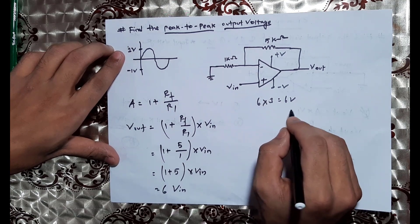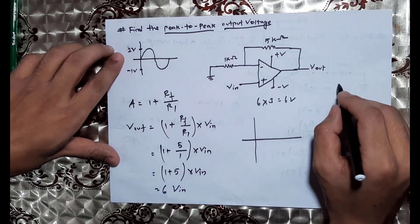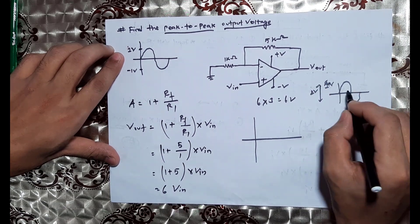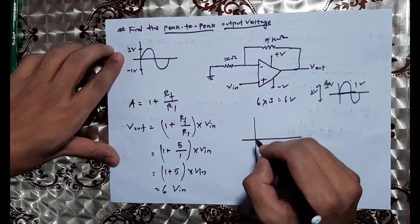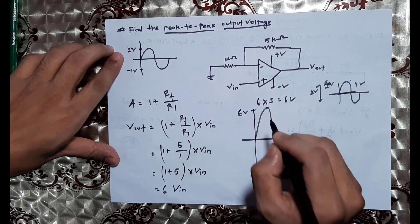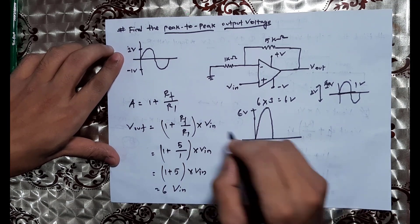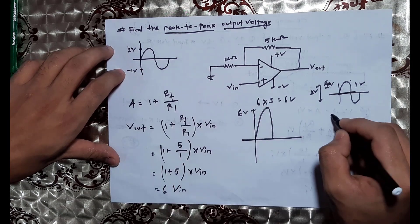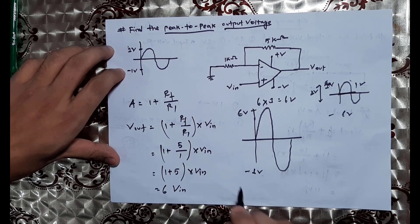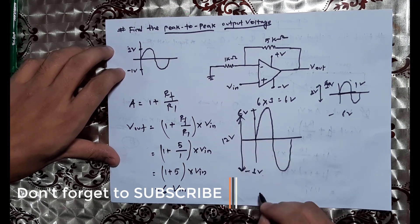Input voltage is equal to 1V, that means 2V peak to peak. The 1V positive half cycle gives 1V into 6, which is 6V. The 6V positive non-inverting output, and out of phase negative minus 6V. So the total is 12V peak to peak.